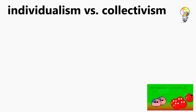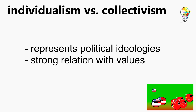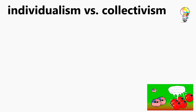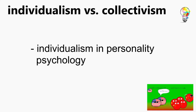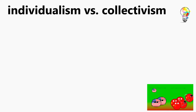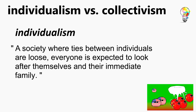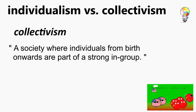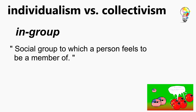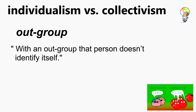The terms individualism and collectivism were first used in the 19th century to represent political ideologies and are strongly value-related. In the 1920s they are presented as opposites, and emerged in the 1960s in personality psychology as individualism but not collectivism. Hofstede defines individualism as a society where ties between individuals are loose and everyone is expected to look after themselves and their immediate family. Collectivism is defined as a society where individuals from birth onwards are part of a strong in-group. The term in-group refers to a social group to which a person feels they belong, while an out-group is one they don't identify with.